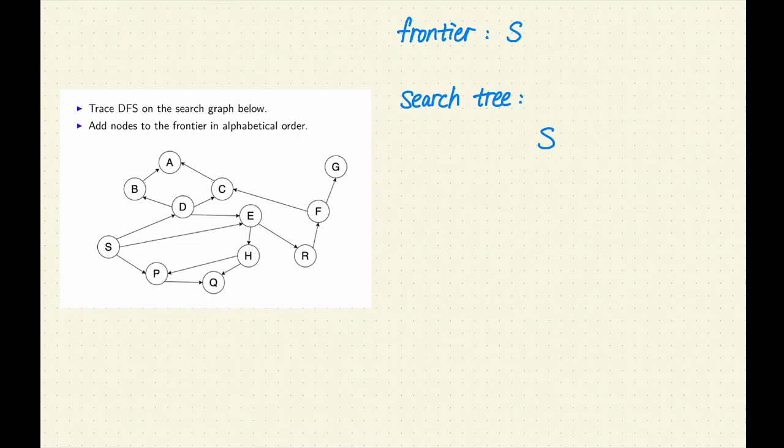Step 1. The most recent node added to the frontier was S. S is the first node expanded. Remove S from the frontier. S is not a goal. Let's expand S. S has three successors: D, E, and P. Add them to the frontier in alphabetical order. Also add them to the search tree.